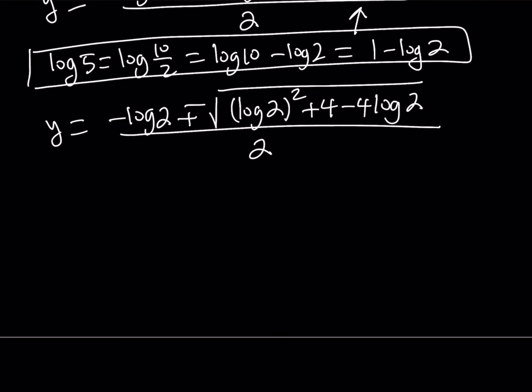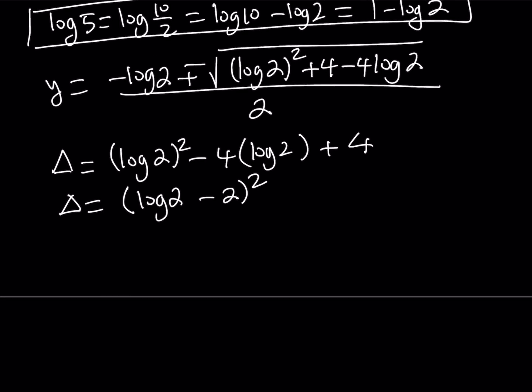Now, if you look at the expression inside the radical carefully, that's actually the discriminant. So let's go ahead and write it as delta equals log 2 squared minus 4 log 2 plus 4, which can be written as log 2 minus 2 quantity squared. So our discriminant is a perfect square, sort of, something squared.